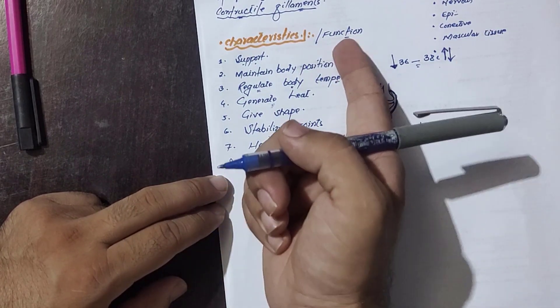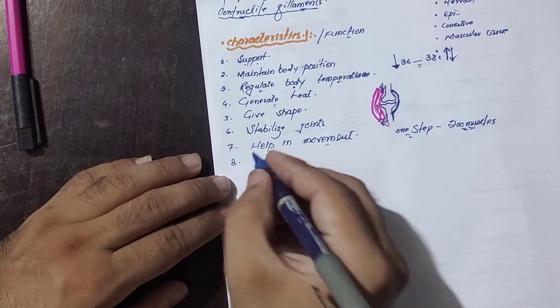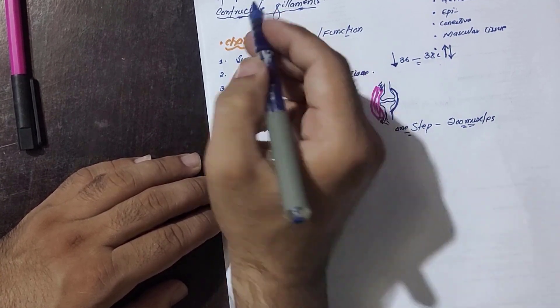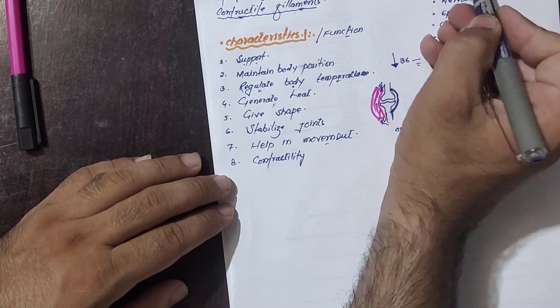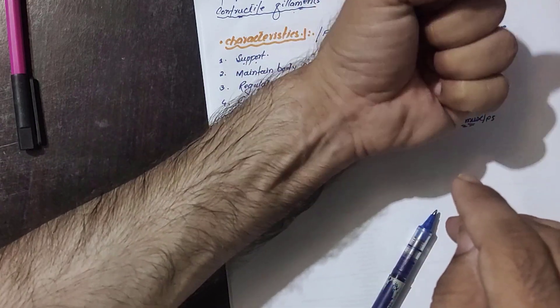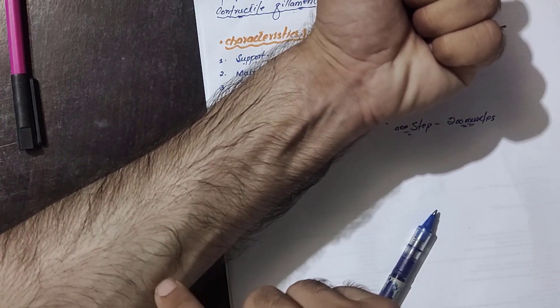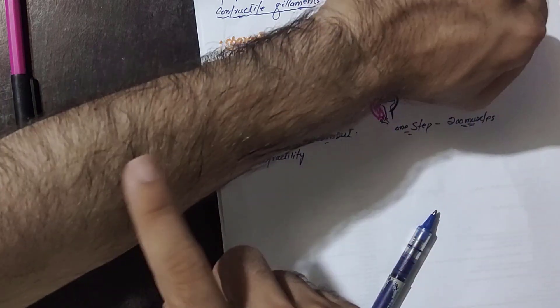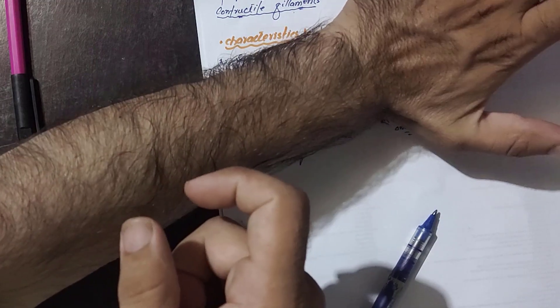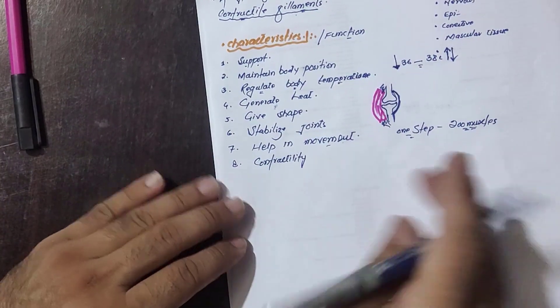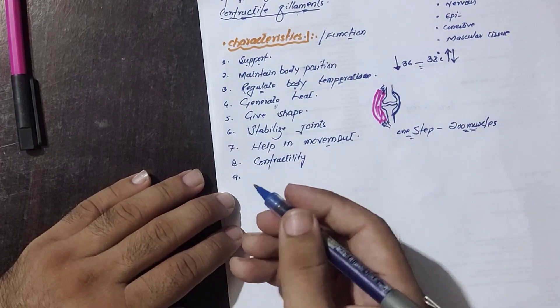The next characteristic is contractility. Because of the contractile filaments present inside the muscle, muscles are able to contract. When I contract the muscles in my hand, you can see the bones move. Muscles in the anterior compartment contract to produce flexion, and contraction of the posterior compartment produces extension — the fingers go back. So muscles show contractility.